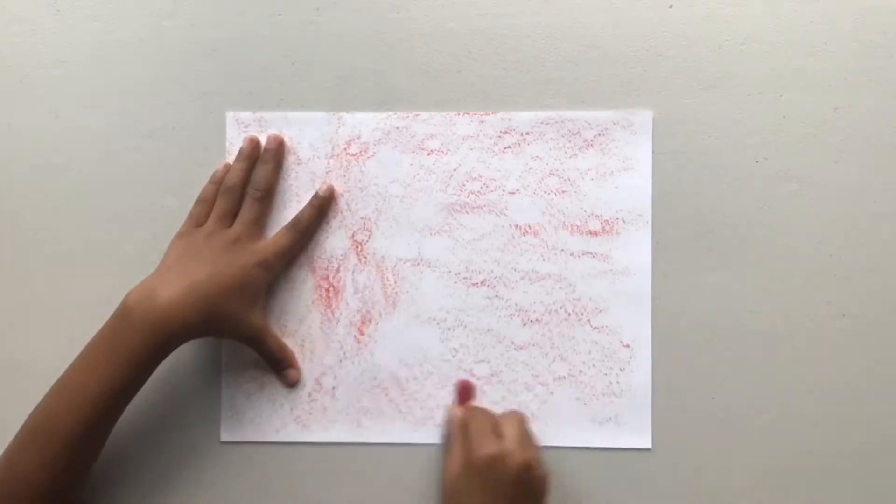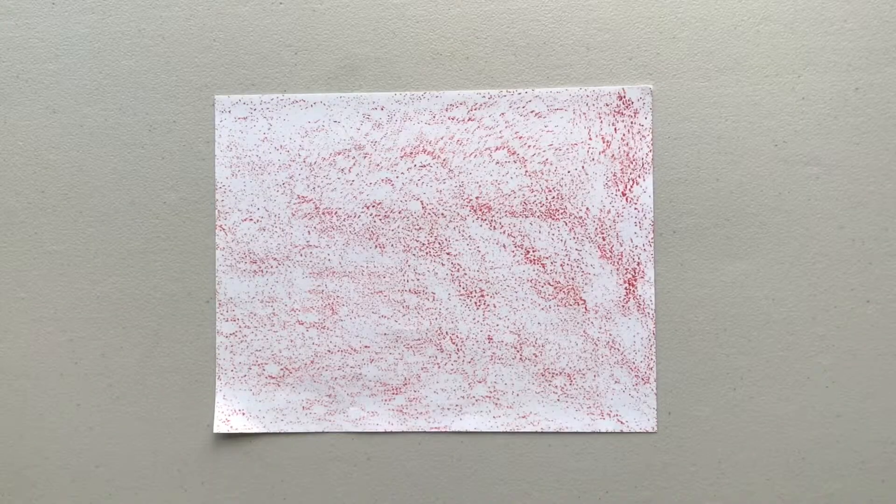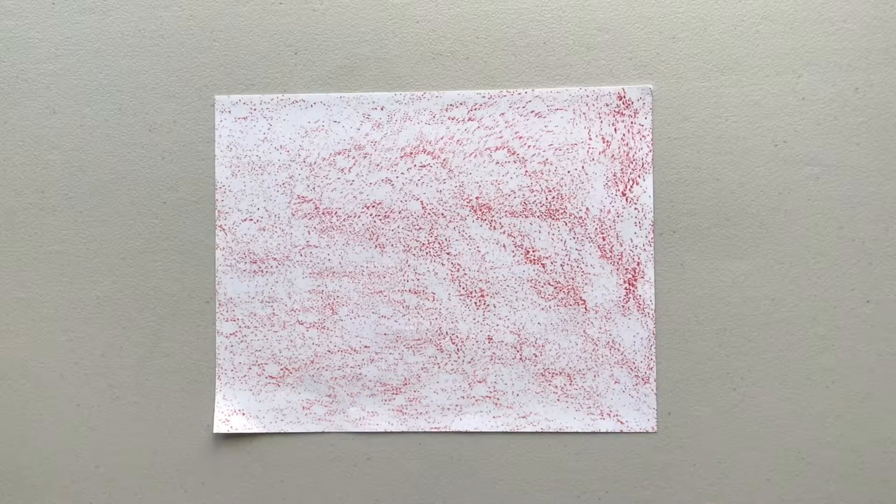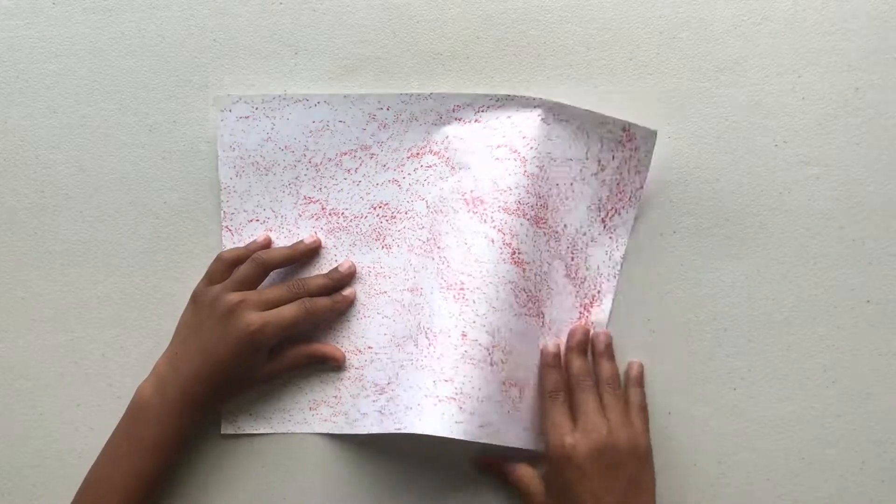Finished coloring one side of my sheet. Now let's get started. Fold the paper in half.